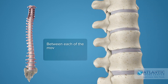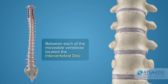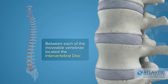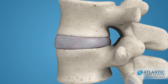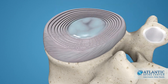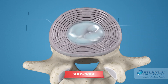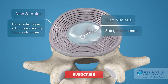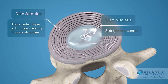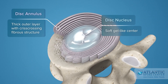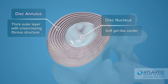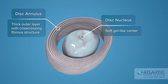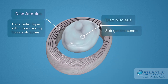Between each of the movable vertebrae is located the intervertebral disc. Intervertebral discs consist of a thick outer layer with a criss-crossing fibrous structure, the annulus, that surrounds the soft, gel-like center, the nucleus.